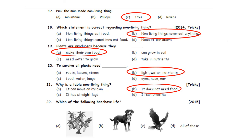Last one: Which of the following has life? Option A: Mango tree. Option B: Dog. Option C: Eagle. Option D: All of these. All living things have life. In these options, mango tree, dog, and eagle all have life. So, the answer is Option D — All of these.